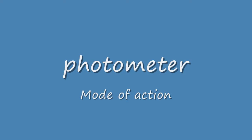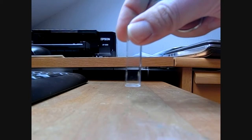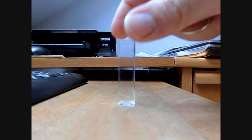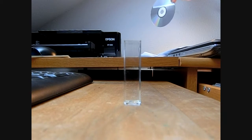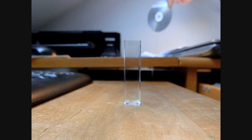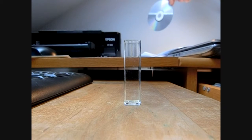Hello, I would like to show you how a photometer works. As an integral part of a photometer, you usually have a cuvette where you put your substance in, and you have a light source. As you can see with the CD in the back, you can easily diffract light into different colors.